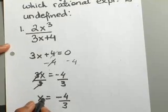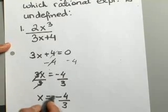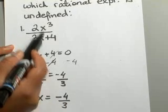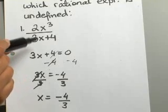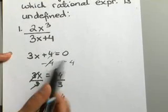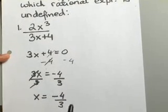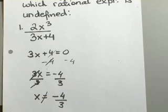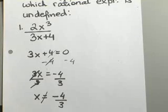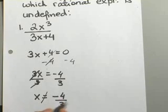That gives you x equals negative 4 thirds. This says if I were to go back and substitute negative 4 over 3 for all my x values, my denominator would end up being 0. That tells me we cannot use x equals negative 4 thirds as part of our values for the rational expression. So this is the answer we are looking for: x equals negative 4 thirds.